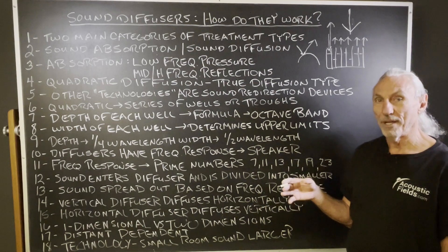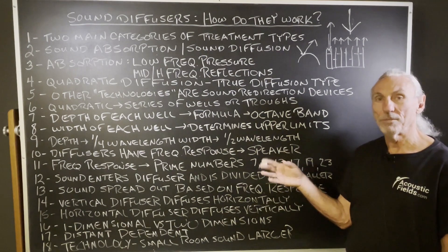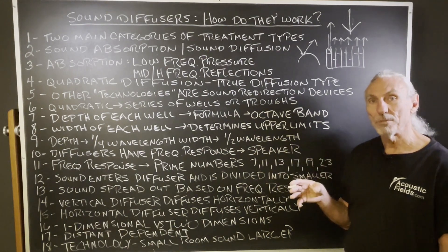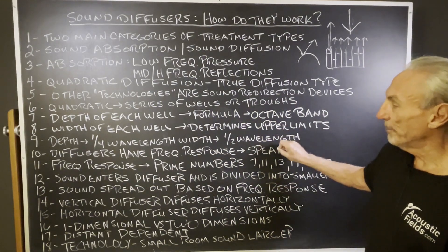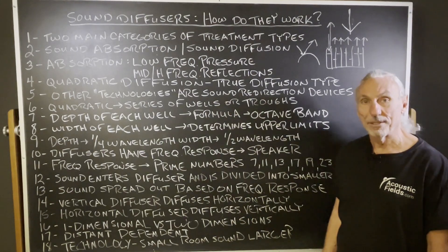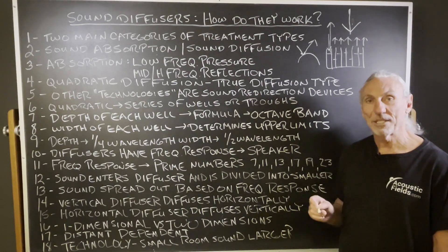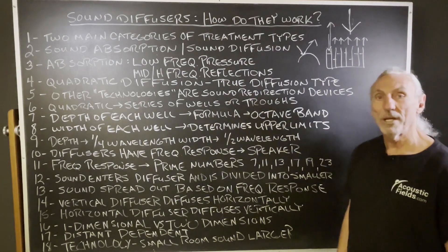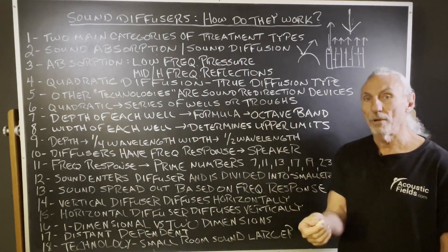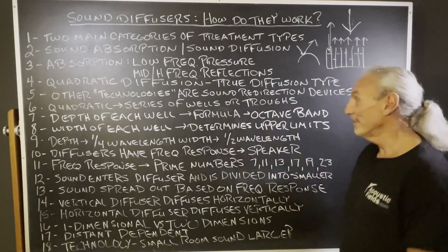The width is half wavelength, so you end up with a frequency response: a higher frequency response based on the width and a lower frequency response based on the depth. Diffusers have a frequency response just like a speaker. That's why when you use diffusion, you have to be very cognizant about the distances involved between the diffuser and your ears. If you don't have enough distance for the lowest wavelength to run, you're going to get phase issues — it won't fully form. The goal of treatment is to eliminate phase.